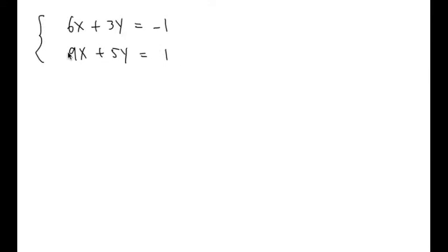Let's solve a system of equations: 6x plus 3y equals negative 1, and the second equation is 9x plus 5y equals 1. Perhaps the best way for these equations is solving by elimination, because all the variables have a number in front of them besides the number 1.